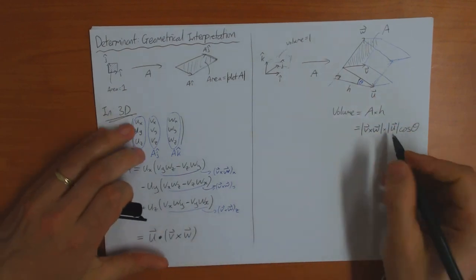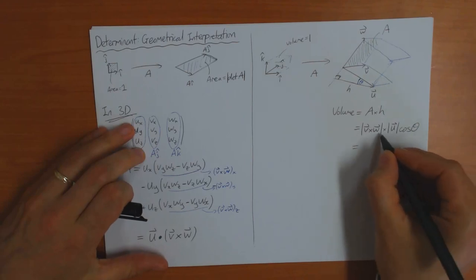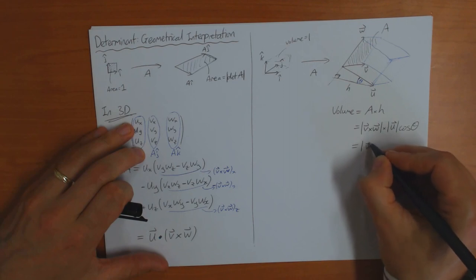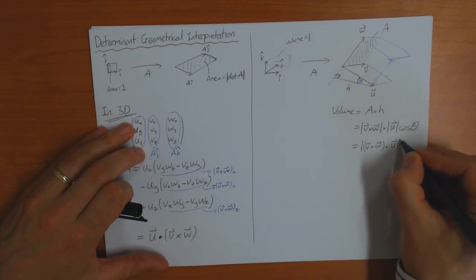But then therefore, this defines the formula for the scalar product. So this is V cross W dot U.